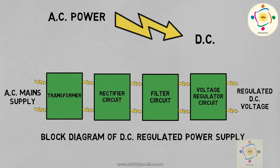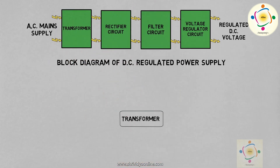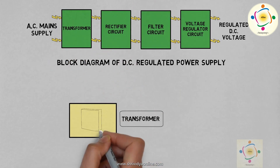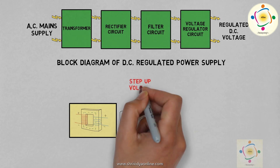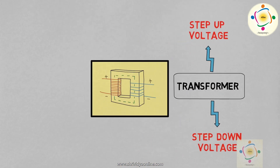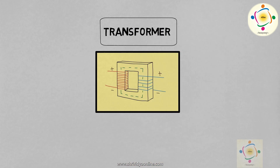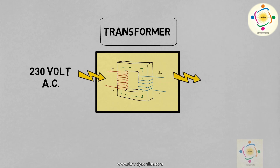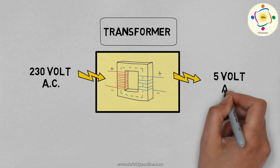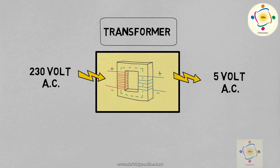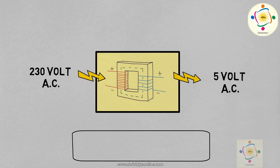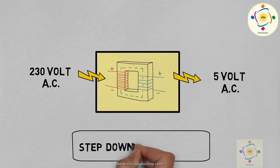The first block is the transformer. This is the device used to step up or step down the voltage. For example, if you want to make a power supply of 5V, then this device converts 230V AC to 5V AC. As you are reducing the voltage, it is called a step down transformer.